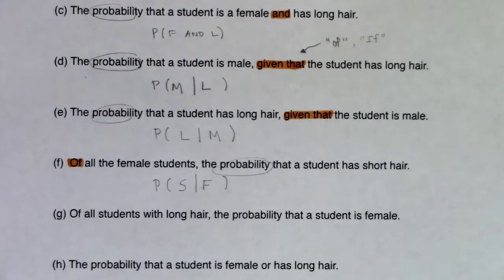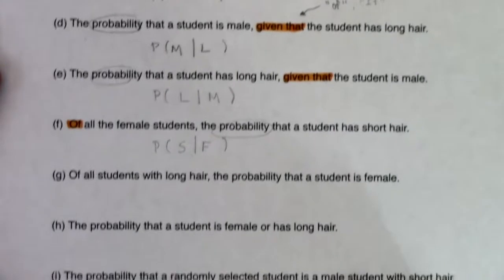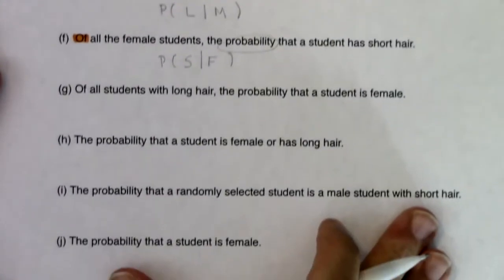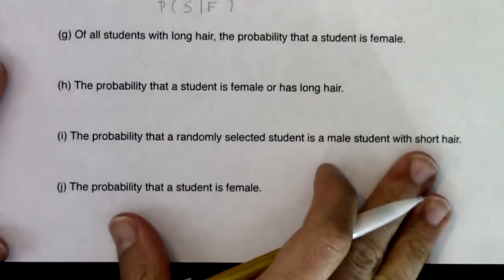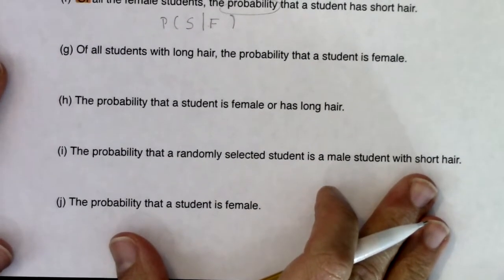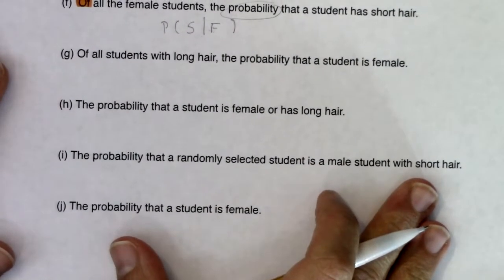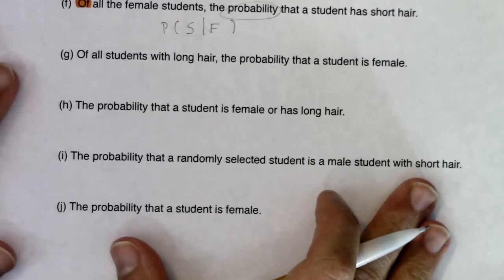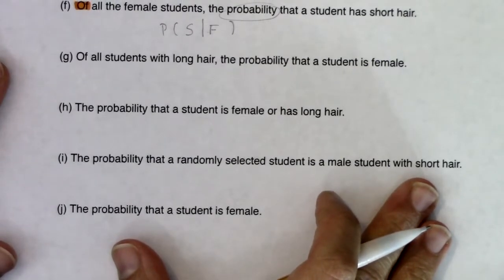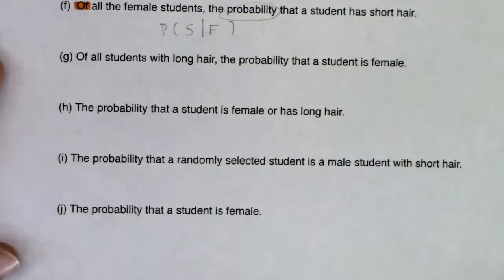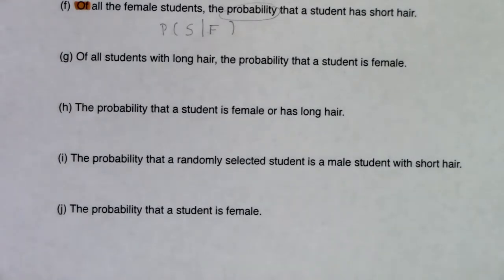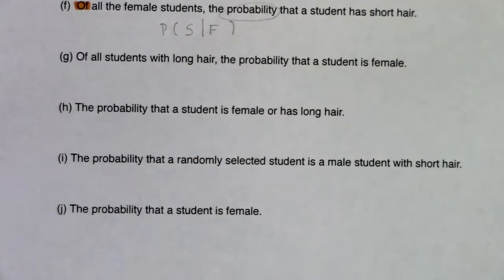This is where it would be a good idea if you're following along to pause the video, try and do G through I, and then come back and run them with me to see if you got the same notation. This is just a notation game — there are no numbers to calculate. We're going to do that when we start in on example seven.